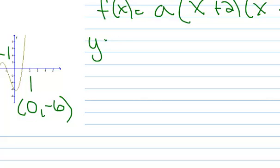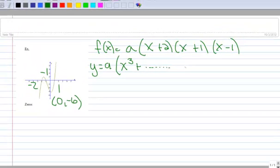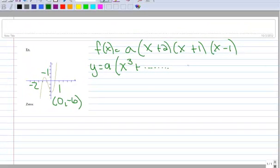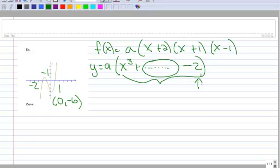If we were to multiply this out, leaving the leading coefficient in the front, the first term is always going to be the x times the x times the x. So it would be x cubed. And then you're going to have a bunch of other terms in here. You're going to have an x squared and an x. And then way down at the end is going to be two times one times negative one. So that's a negative two. And remember, this just means all the stuff in between. So every term in here has an x in it except for this last term.